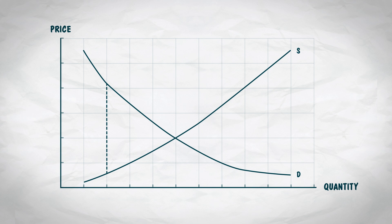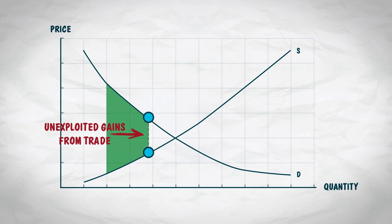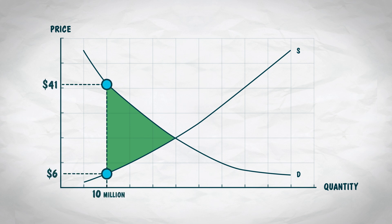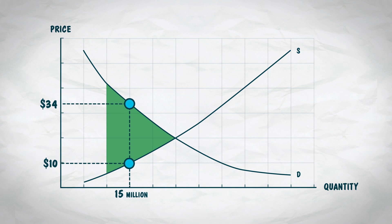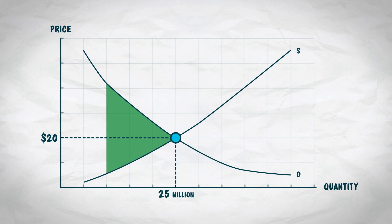In fact, so long as the price the buyers are willing to pay for the next barrel — right off the demand curve — exceeds the price the suppliers are willing to sell the next barrel of oil for — right off the supply curve — there are gains to be had from trade, and thus incentives to trade more. Buyers and sellers will continue trading until there are no more gains from trade, which means they will continue to trade more units until the price at which buyers are willing to buy just equals the price at which sellers are willing to sell.